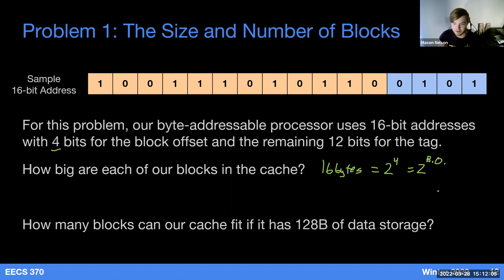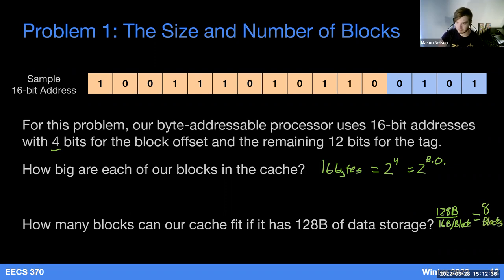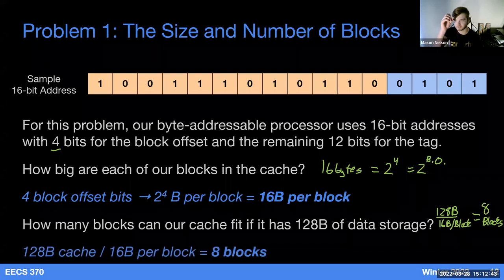Knowing we have 16 bytes in each block and 128 bytes of data storage total, how many blocks do we have? We divide 128 bytes by 16 bytes per block — that gives us eight blocks. We can do that easy division: take our total cache size divided by the block size to get the total number of blocks.